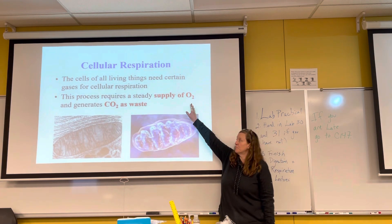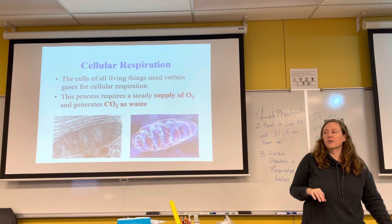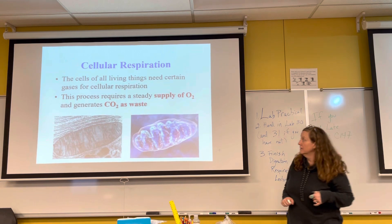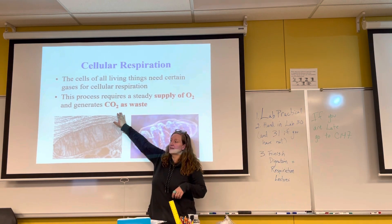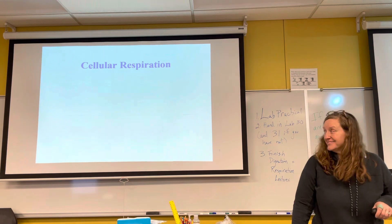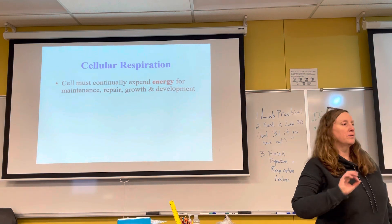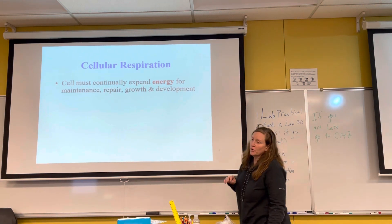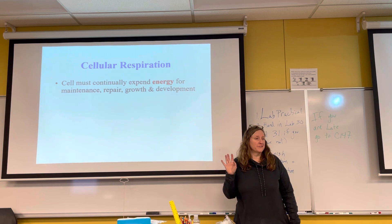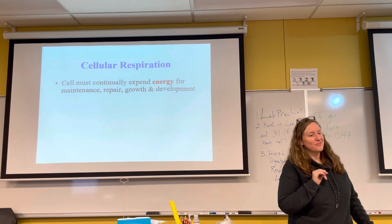With a supply of oxygen, we more efficiently break down our energy sources and get more ATP per our food. As a waste product of that, carbon dioxide is released. We need a continual supply of energy for four things: growth, repair, maintenance, and development. You all are pretty much done with development and growth — you're in the repair and maintenance phase of your lives.